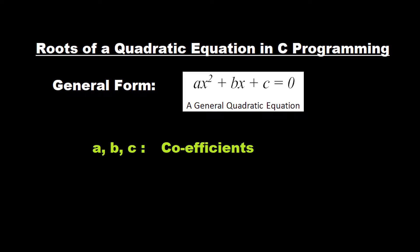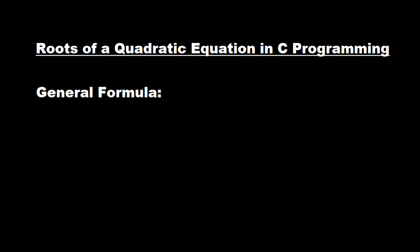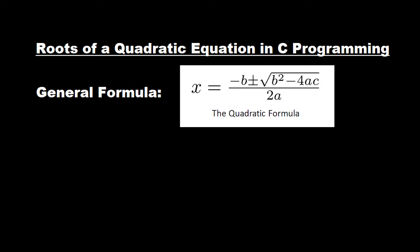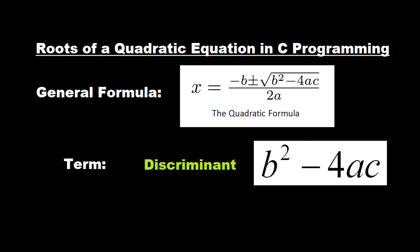To find the roots of a quadratic equation, first of all you have to know the formula. The formula is as you can see on the screen. Before that, we need to know something — we need to find a term so that we can find the roots of a quadratic equation. The term is called the discriminant, which is represented as b squared minus 4 into a into c.